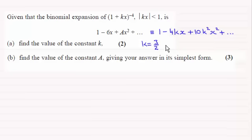So in order to find the constant A, all I need to do is just compare coefficients of x squared. I can see that 10k squared is the A, and then just substitute for k.